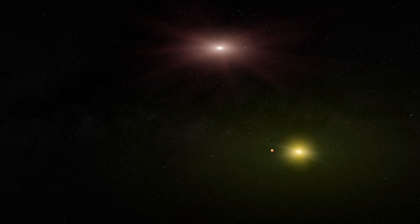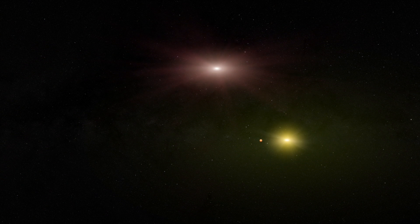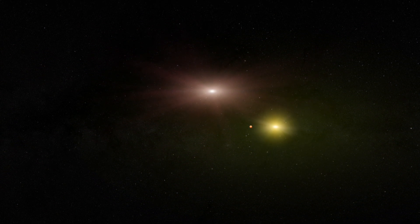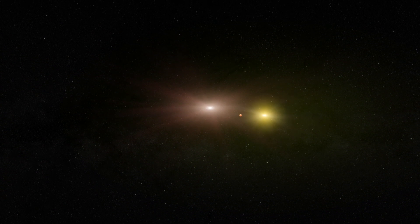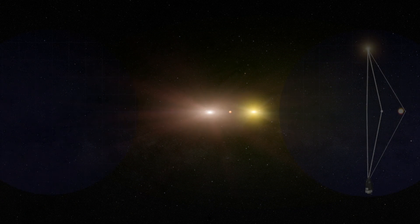When a star passes directly between us and a more distant star, its gravity can act like a lens, magnifying the background star's brightness significantly for a few weeks.